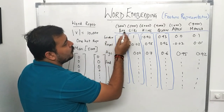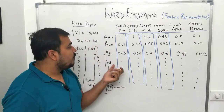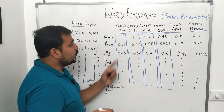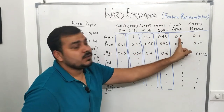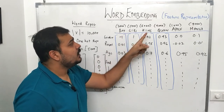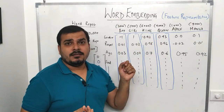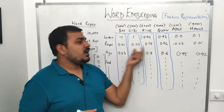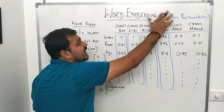For example, gender relates to boy, girl, king, and queen — but not to apple or mango. A feature like 'fruit' would relate to apple and mango but not to the others. Suppose we have values like minus one and one for boy and girl, uniquely representing them, and minus 0.92 and 0.93 for king and queen. Apple and mango might have values like 0.0 and 0.1 for gender. We can clearly see that boy and girl share similar gender feature values, as do king and queen, since they are similar words. Instead of one-hot representation, we create this featurized representation.